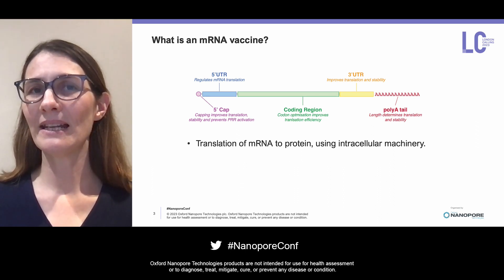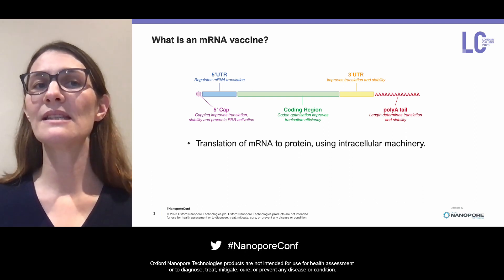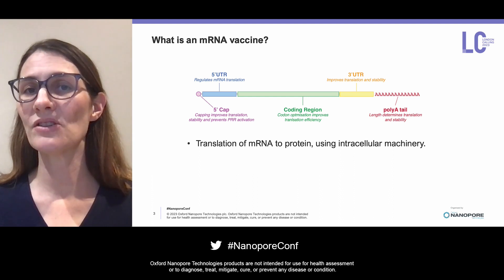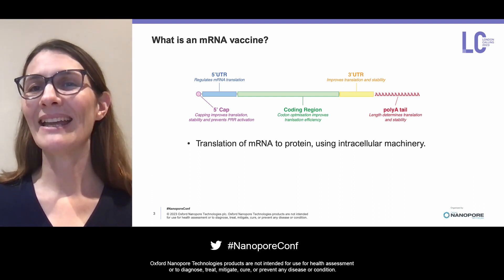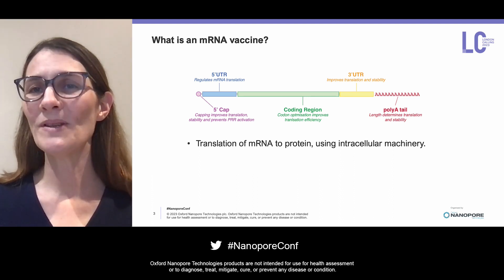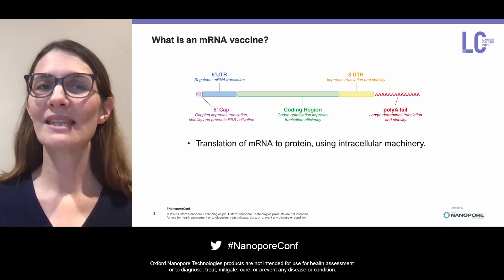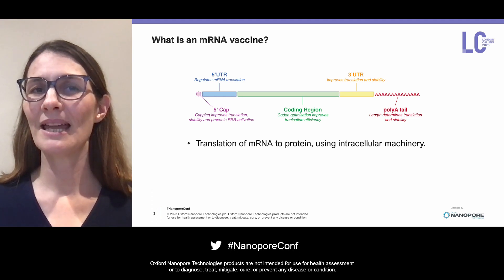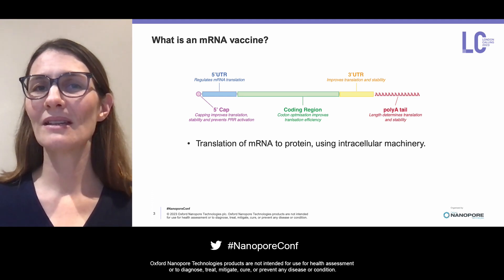The synthetic mRNA is synthesized in vitro, then delivered into cells or organisms, and translated into a protein using the intracellular machinery. The mRNA can encode almost any drug, including those that are difficult to manufacture, such as antigens for vaccines, antibodies, enzymes, signaling molecules, and CRISPR.